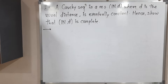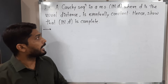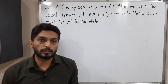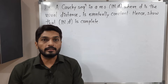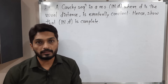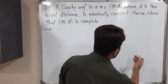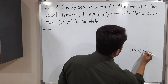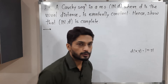Hi dear students. In this video we are going to discuss this example. So what we have: metric space N, D. N means the set of natural numbers 1, 2, 3, 4 and so on. D is a usual metric on R. Usual metric means it is defined as D of x, y is equal to mod x minus y. So this is a definition of D.